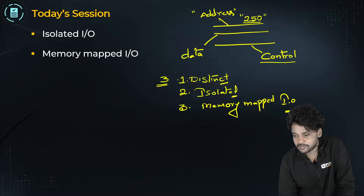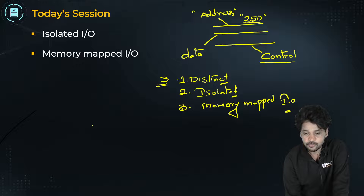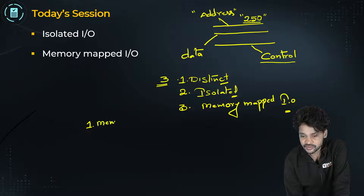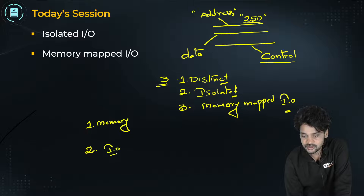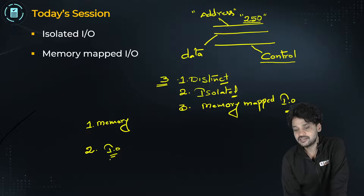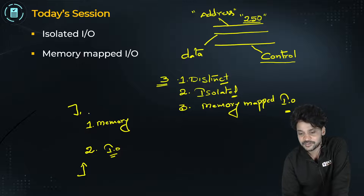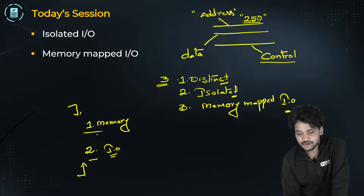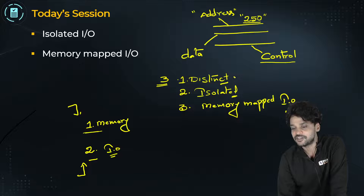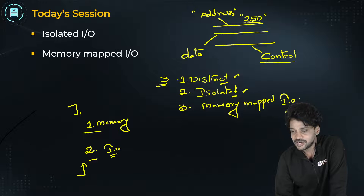There are two primary locations for the CPU: the first one is memory, and the second one is IO devices. To transfer data, if we do not consider the registers — which are local to the CPU — the CPU needs to make transfers to memory as well as IO devices. In order to make this transfer, the CPU can follow any of these three approaches: distinct IO, isolated IO, or memory mapped IO.